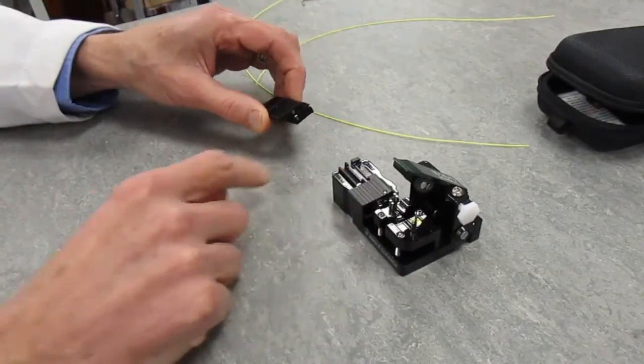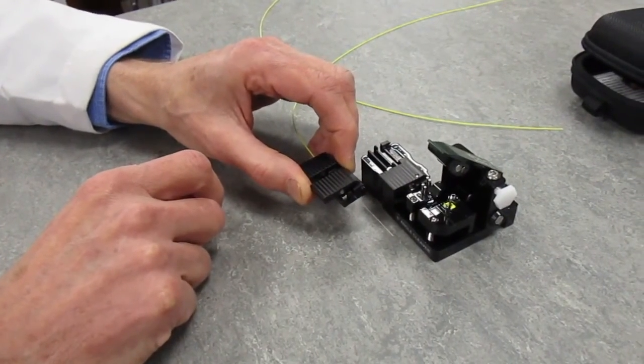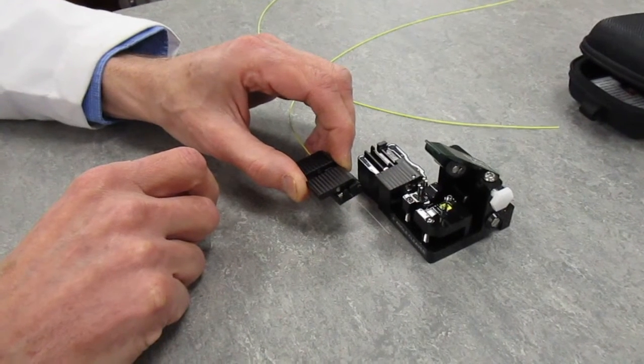We can also take this holder out and put either 900 or 250 coated fiber in. And that should give you an angled cleave. Thank you very much.